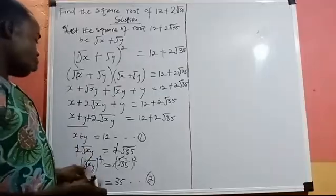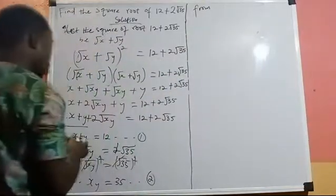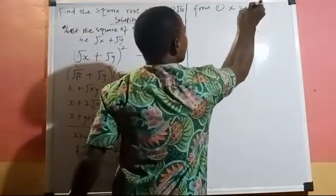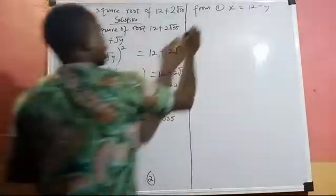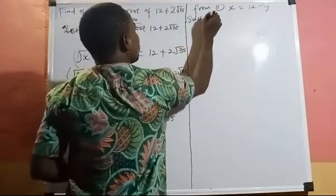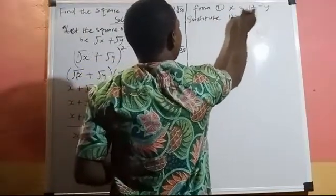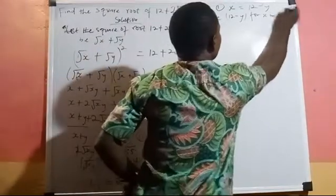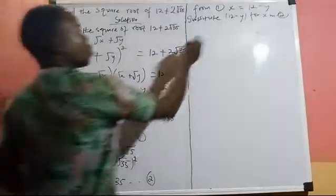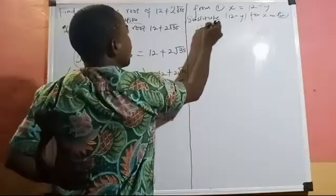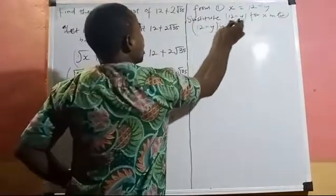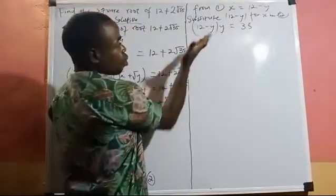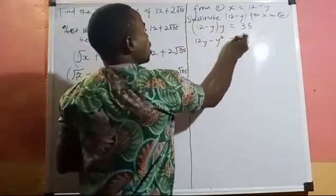Now we solve equation 1 and equation 2. From equation 1, we make x the subject: x = 12 − y. We then substitute this into equation 2, giving us (12 − y) × y = 35, which expands to 12y − y² = 35.